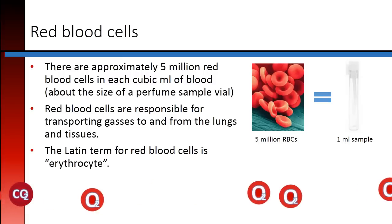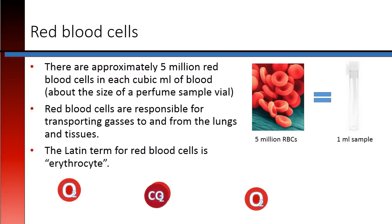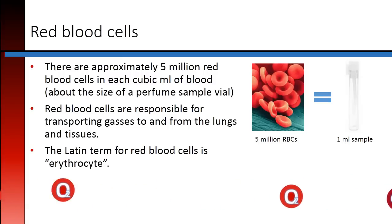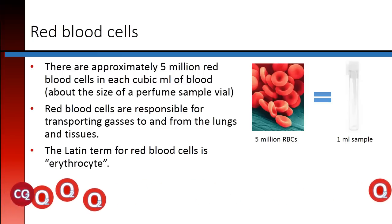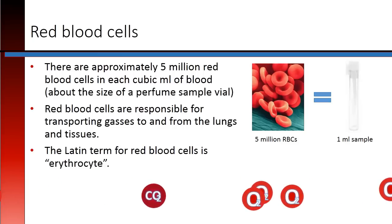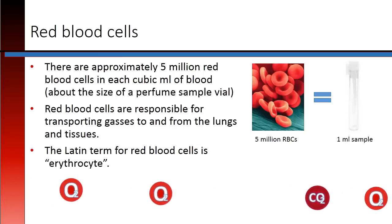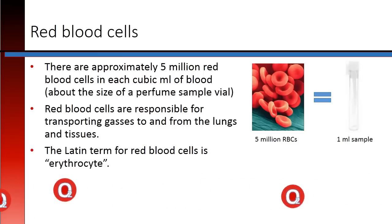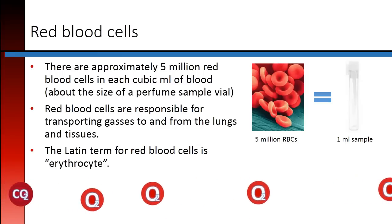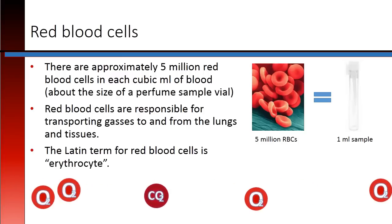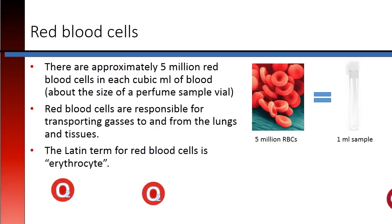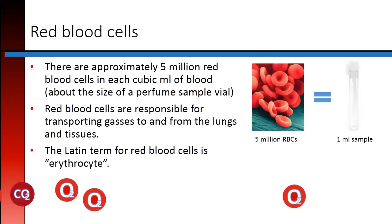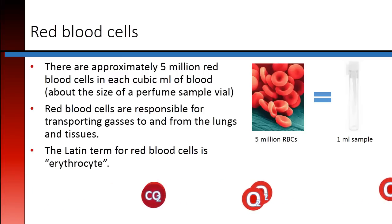There are approximately 5 million red blood cells in each cubic milliliter of blood, about the size of a perfume sample vial. Red blood cells are responsible for transporting gases to and from the lungs and tissues. The Latin term for red blood cells is erythrocyte.